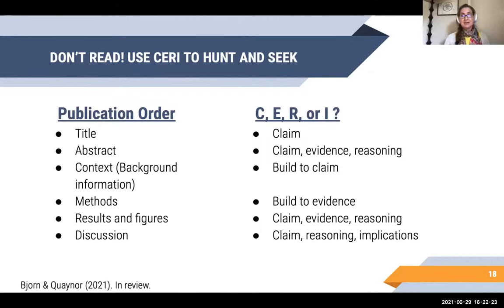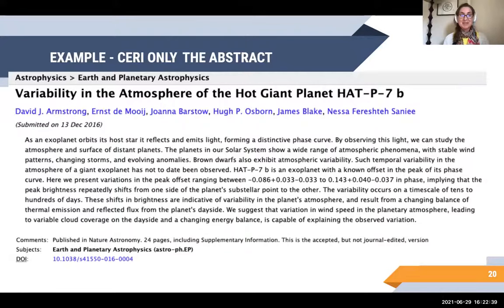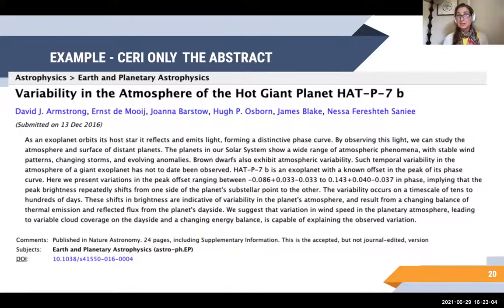Let's do a worked example. This begins to make more sense when we can see how to apply these ideas to a paper. This example comes from Nature Astronomy — it was actually in the first issue ever published in that journal, back in 2016 — about a hot giant planet, HAT-P7b. Here's the abstract and title. I want to see if I can find the CERI elements here without even looking at the rest of the paper.